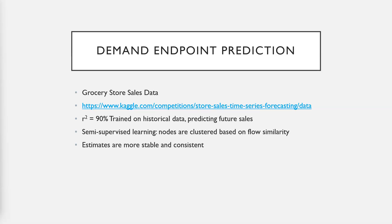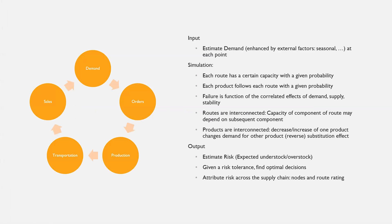Part of the reason the model performed so well was because I was able to cluster stores together that were similar. GS1 data would allow stores to be clustered based upon similarity, which would improve the accuracy of demand forecasts. Once we have the flow estimates for each node of the supply chain network, it is possible to simulate the supply chain cycle.